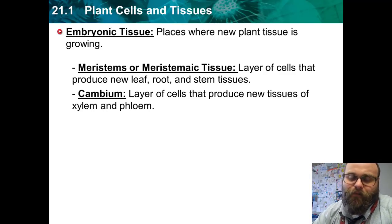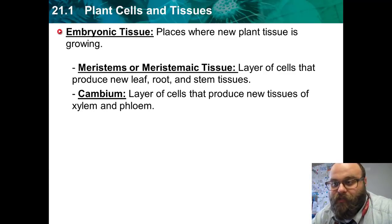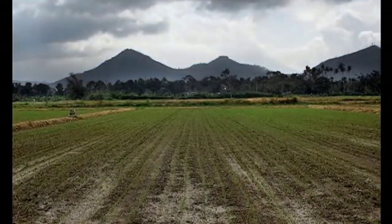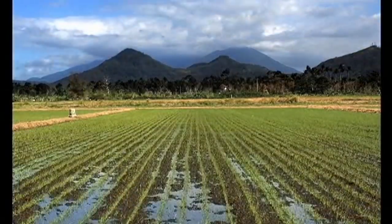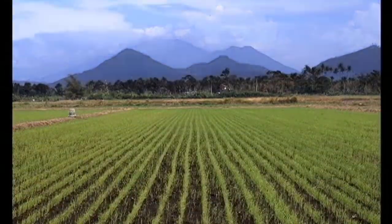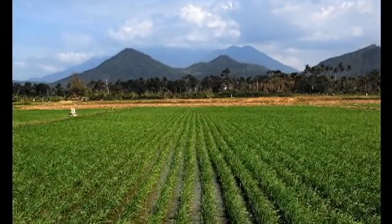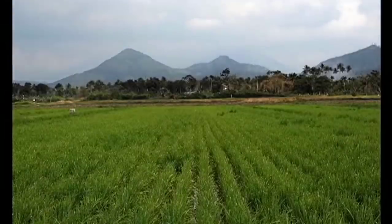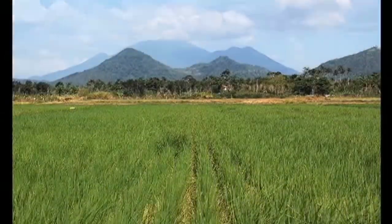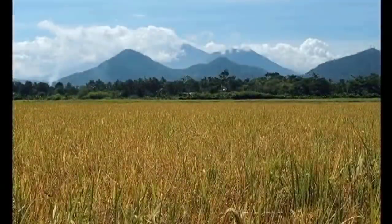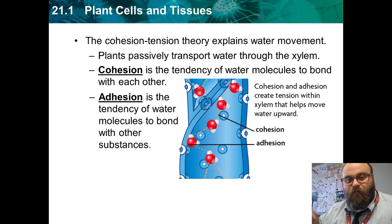There's another type of tissue called embryonic tissue. This is developmental tissue — it grows new plant material. The main type of embryonic tissue is meristems, or meristematic tissue, and these are cells that produce new leaves, roots, and stems. The types of tissue that make xylem and phloem are called cambia.